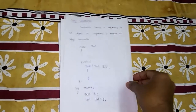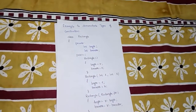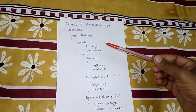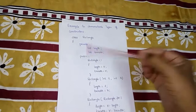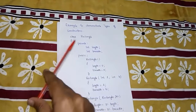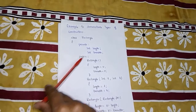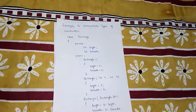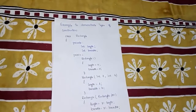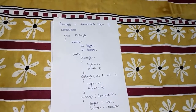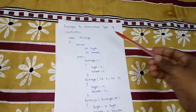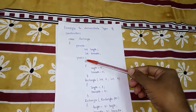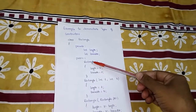Now we will demonstrate all three types of constructors with a program to display and calculate the area of a rectangle. A class has three access specifiers — public, private, and protected — but here we use only private and public. Make sure you always write your constructors in public mode. In the rectangle class, there are two private data members: length and breadth.